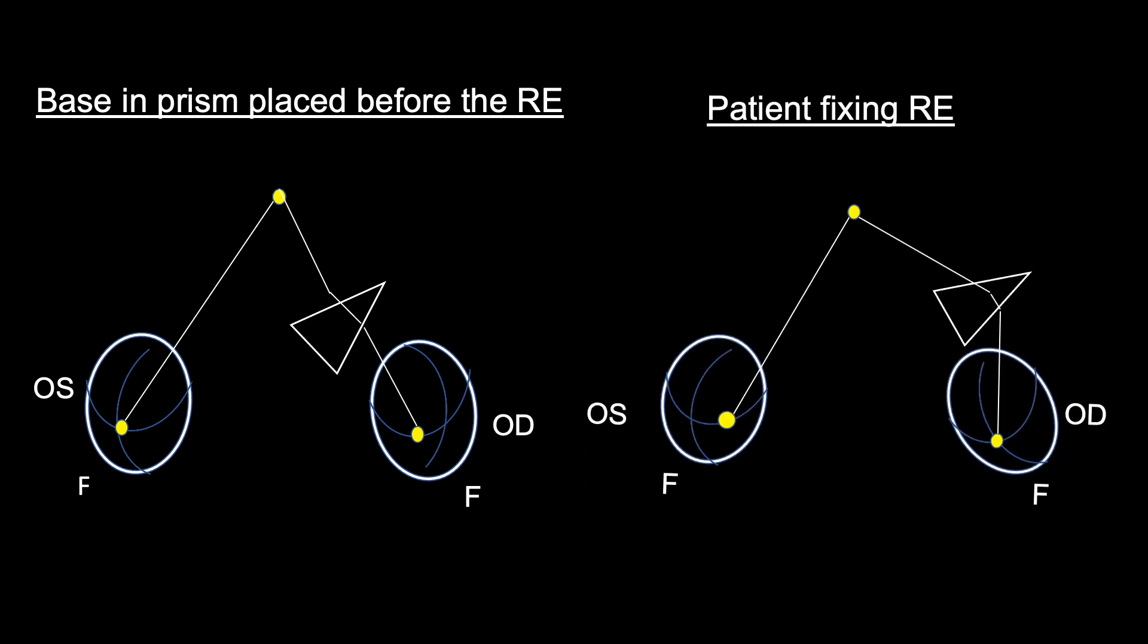Now when the subject fixes with right eye and views through the base in prism, right eye moves temporally to place the image on the fovea. And as per Hering's law, the left eye moves nasally as the image is displaced nasal to the fovea.